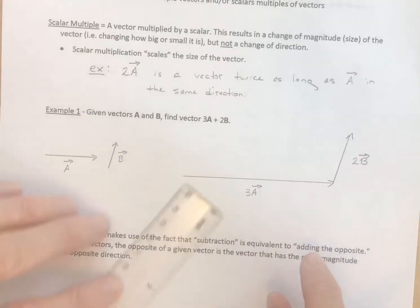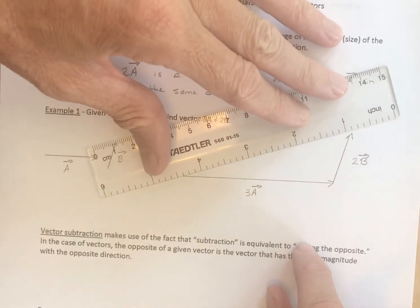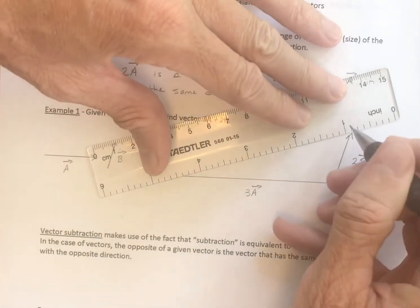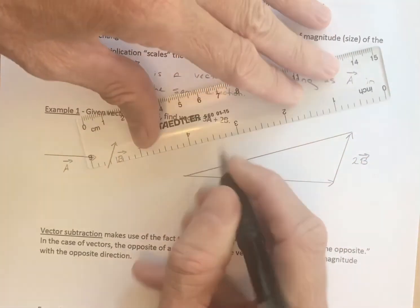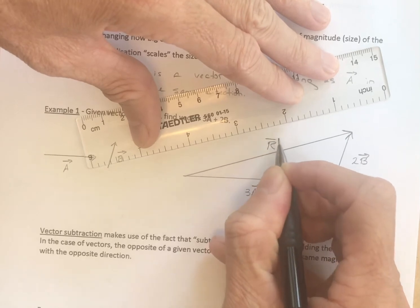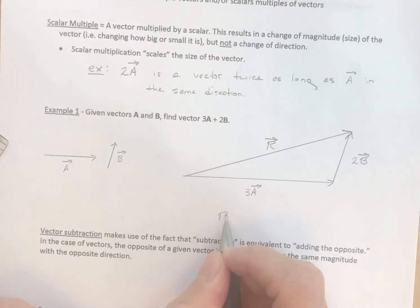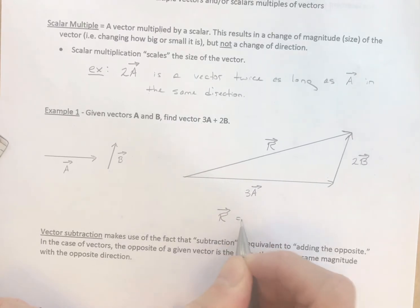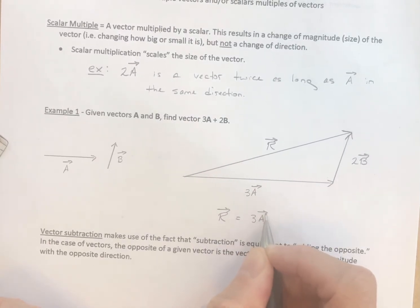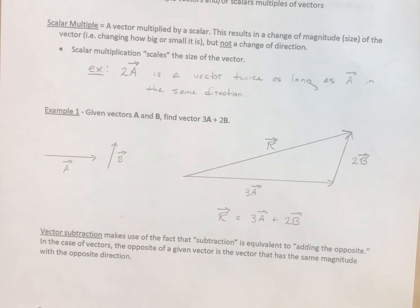We add them up, head to tail. So we know that the sum of these two vectors, which we've been calling the resultant, would be this one right here. And this is r, the resultant. So down here I'll say that r is equal to 3a plus 2b. So that is adding vectors with scalar multiples right there.